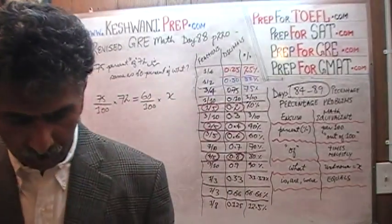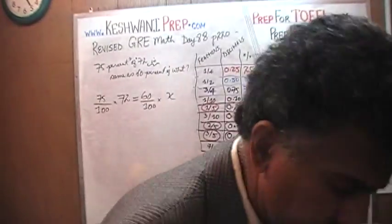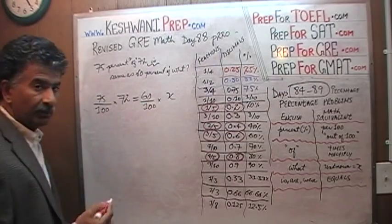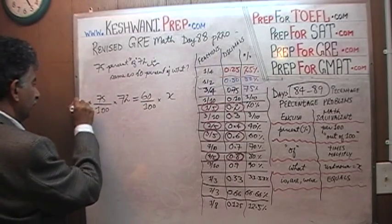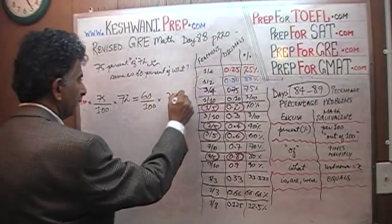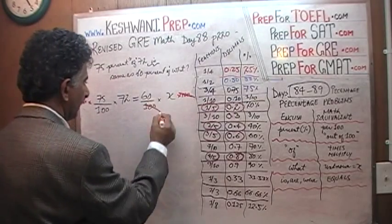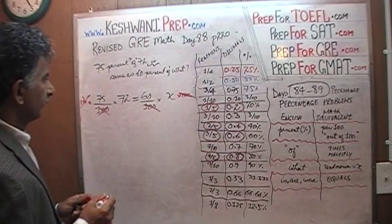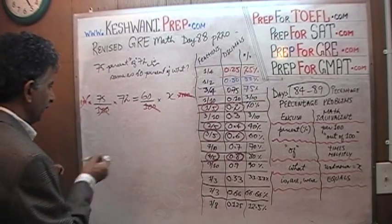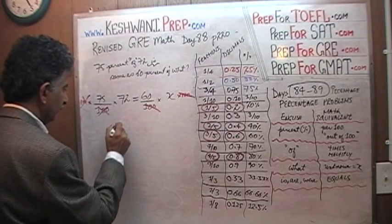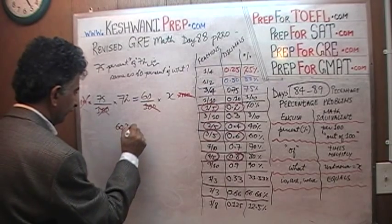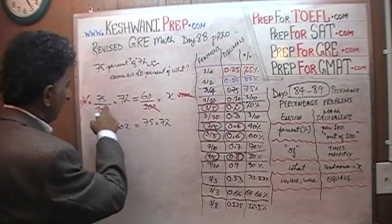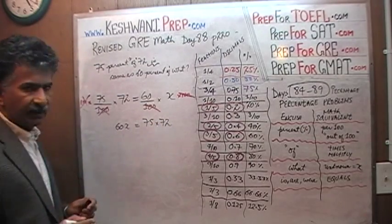I'm not going to go through all the baby steps — just follow me. If you multiply both sides of the equation by 100, this 100 drops out with that 100, and this 100 cancels with the other 100. So now we are left with 60 times x on one side.